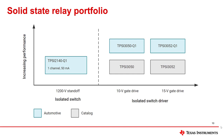There are many types of SSRs that TI has to offer, including specific ones catered to either industrial or automotive applications. The TPSA3050 and TPSA3052 are SSRs with a basic 3K VRMS rating used for industrial applications. The TPSA3050-Q1 and TPSA3052-Q1 are automotive qualified devices with a higher isolation rating of 5K VRMS. The TPSA2140-Q1 is an automotive qualified isolated switch with a 3.75K VRMS isolation rating.